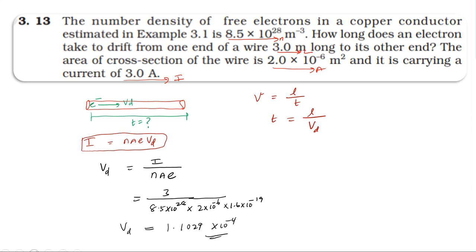Now for the time: time equals length over drift velocity, which is 3 meters divided by 1.10 into 10 power minus 4. Simplifying, the time is approximately 27,200 seconds, or 2.7 into 10 power 4 seconds.